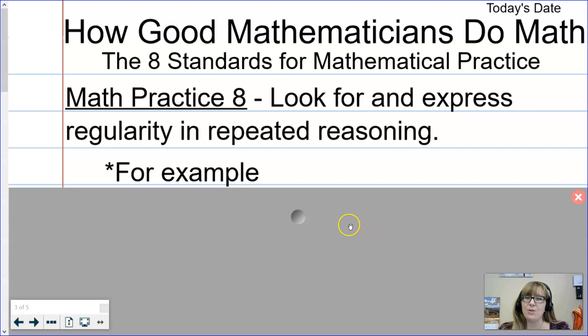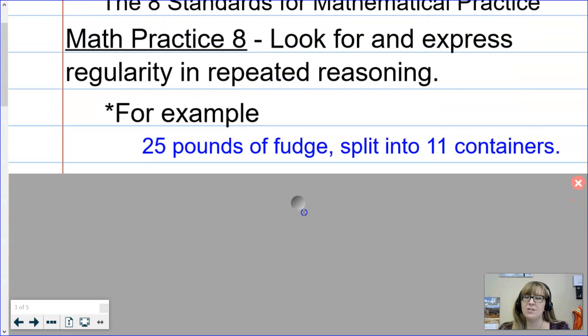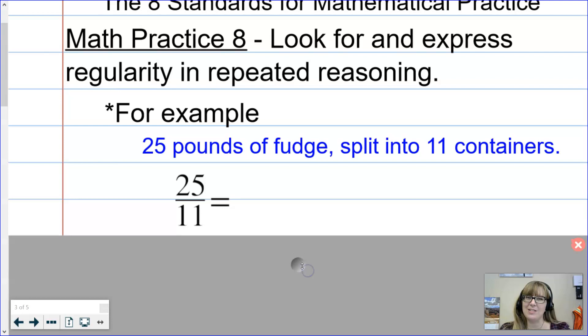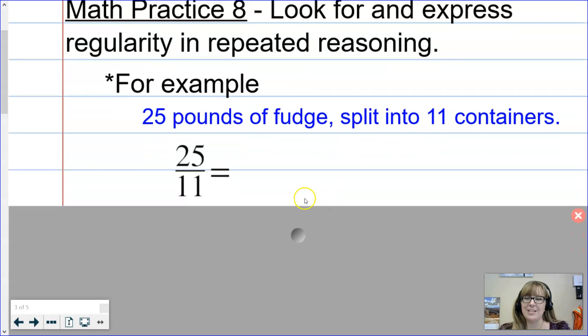Starting with our first example: suppose I have made 25 pounds of fudge for Christmas and I have 11 friends, so I need to split that fudge into 11 containers. We understand that this problem is going to be 25 divided by 11, but this time I'm not going to let you use your calculator. We're going to go old school - long division with pencil and paper.